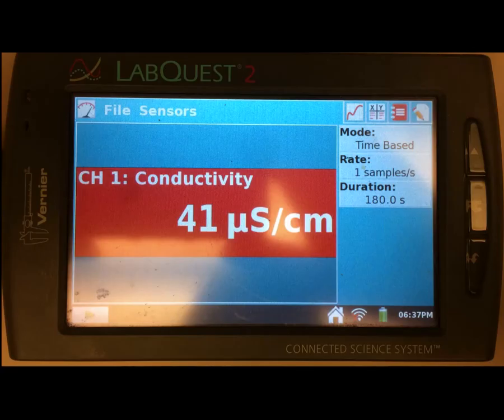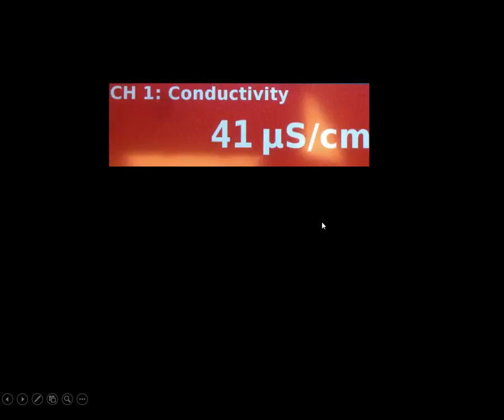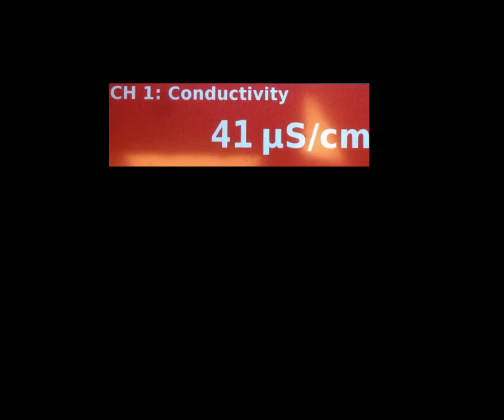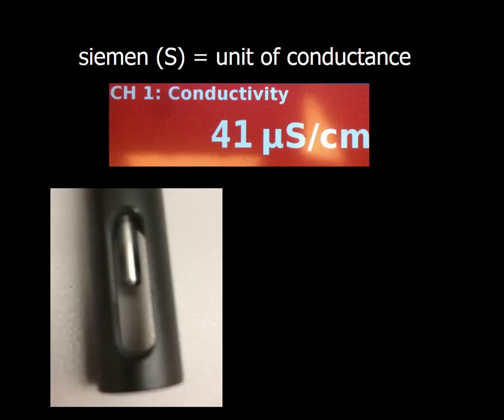On the LabQuest, the conductivity is going to be shown to you with a number, and then this unit right here. So let's talk about this unit. The unit is known as microsiemens per centimeter. The unit of electrical conductance is known as a siemen. The centimeter comes from the fact that this number depends on how far apart these electrodes are.